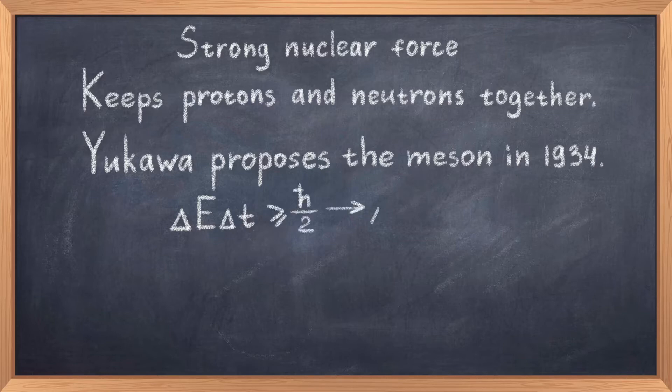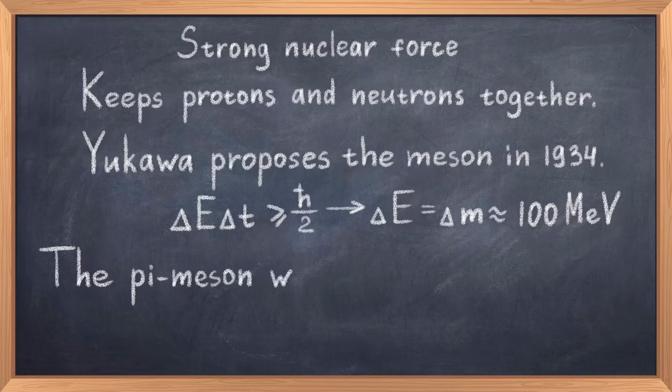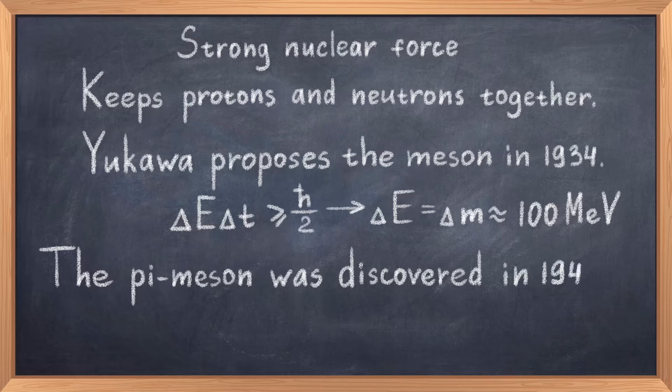By considering the uncertainty principle and the necessary strength of the force, he managed to estimate that the force carrying particle of this new force would be around 100 MeV. Because this mass was larger than the electron mass, but lower than the mass of the proton, he called it meson, which refers to the Greek word mesos meaning intermediate, thus this particle was of intermediate size. In 1947 we finally discovered this meson that Yukawa predicted and he got the Nobel prize in 1949 for his prediction.